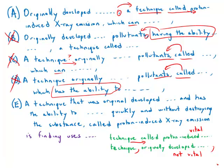So C and D are out. E is just an absolute disaster of wordiness, 'a technique that was originally developed and has the ability to do quickly and without destroying the substance called proton.' So it sounds like the substance itself is called. So that is totally incorrect. It is super wordy. So that's just a disaster.